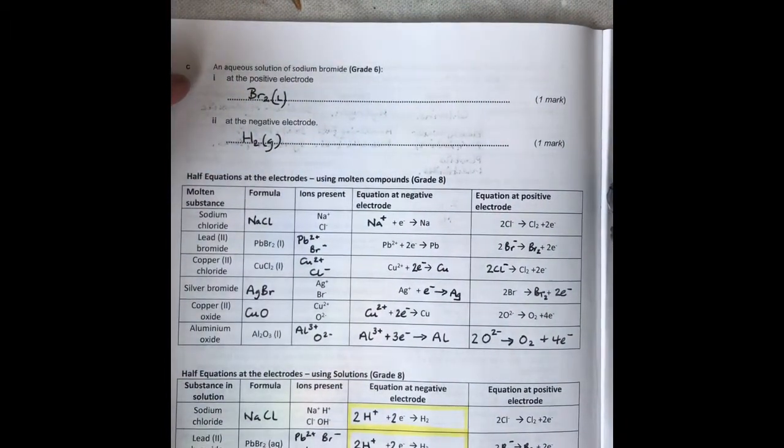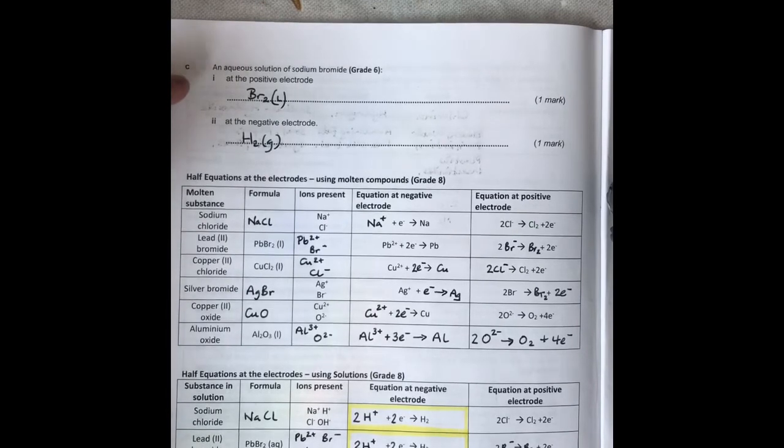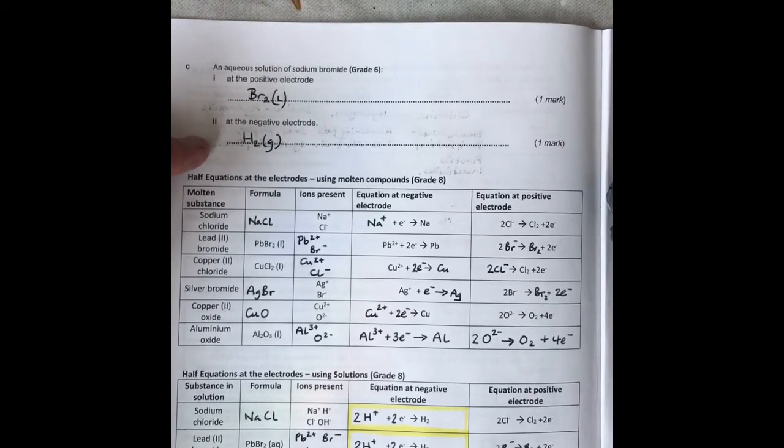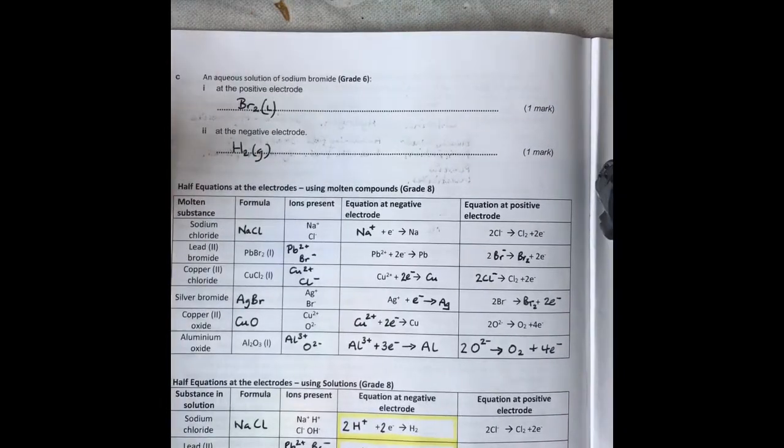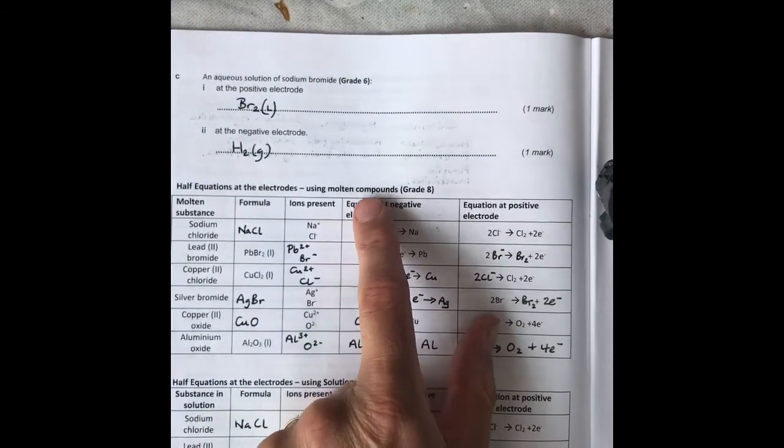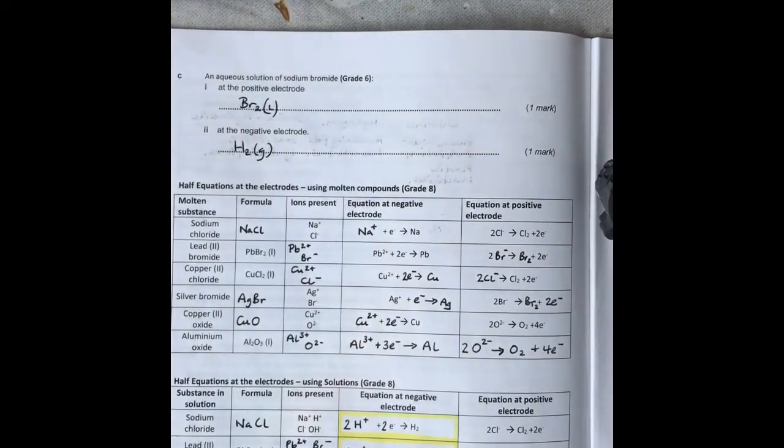Sodium bromide: at the positive electrode is bromine because it's a halogen given off first, and the negative electrode is going to be hydrogen because it is less reactive than sodium. Half equations - you can see the gaps filled in here. These are for molten compounds. There is no water in these at all, so we only have to worry about these ions.